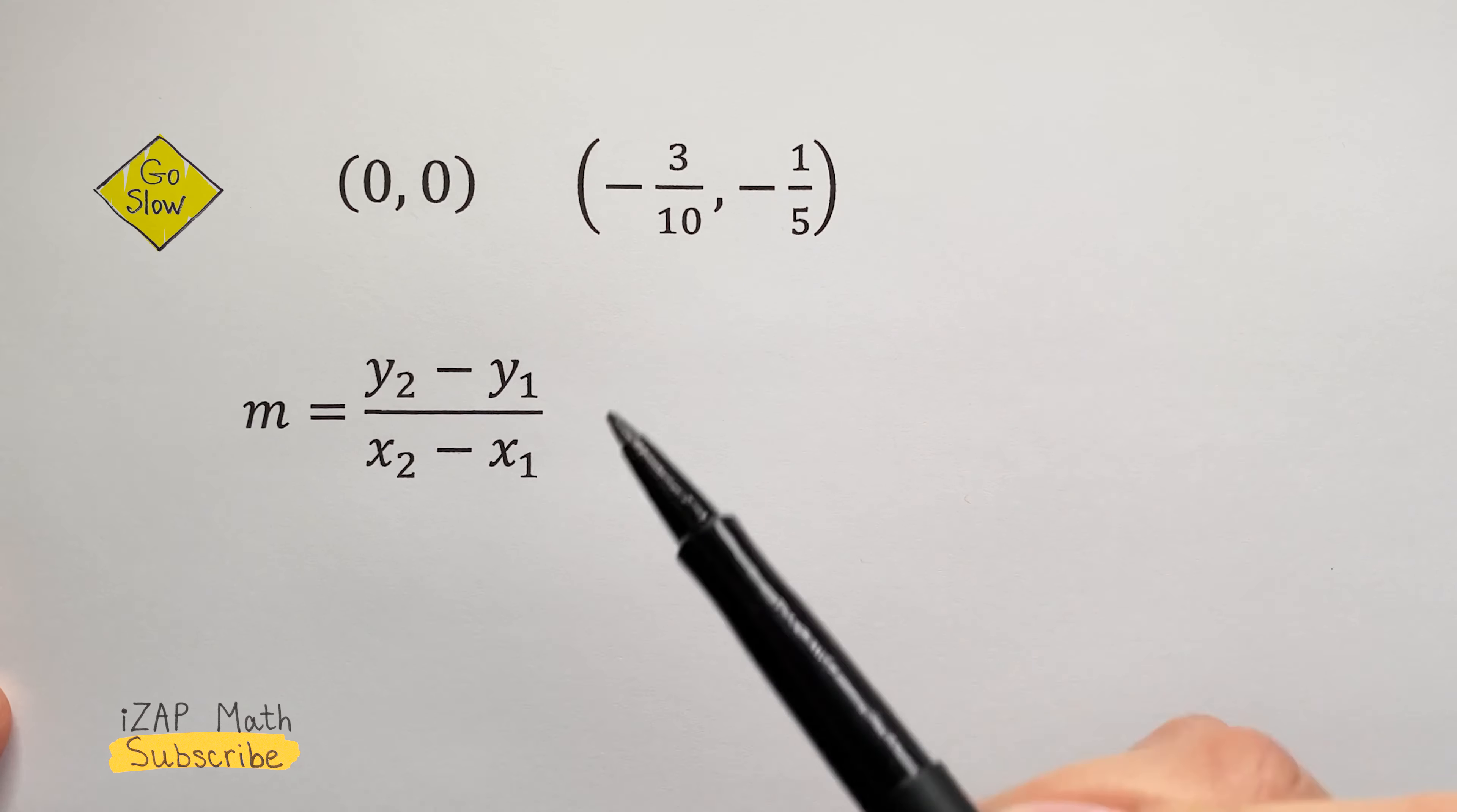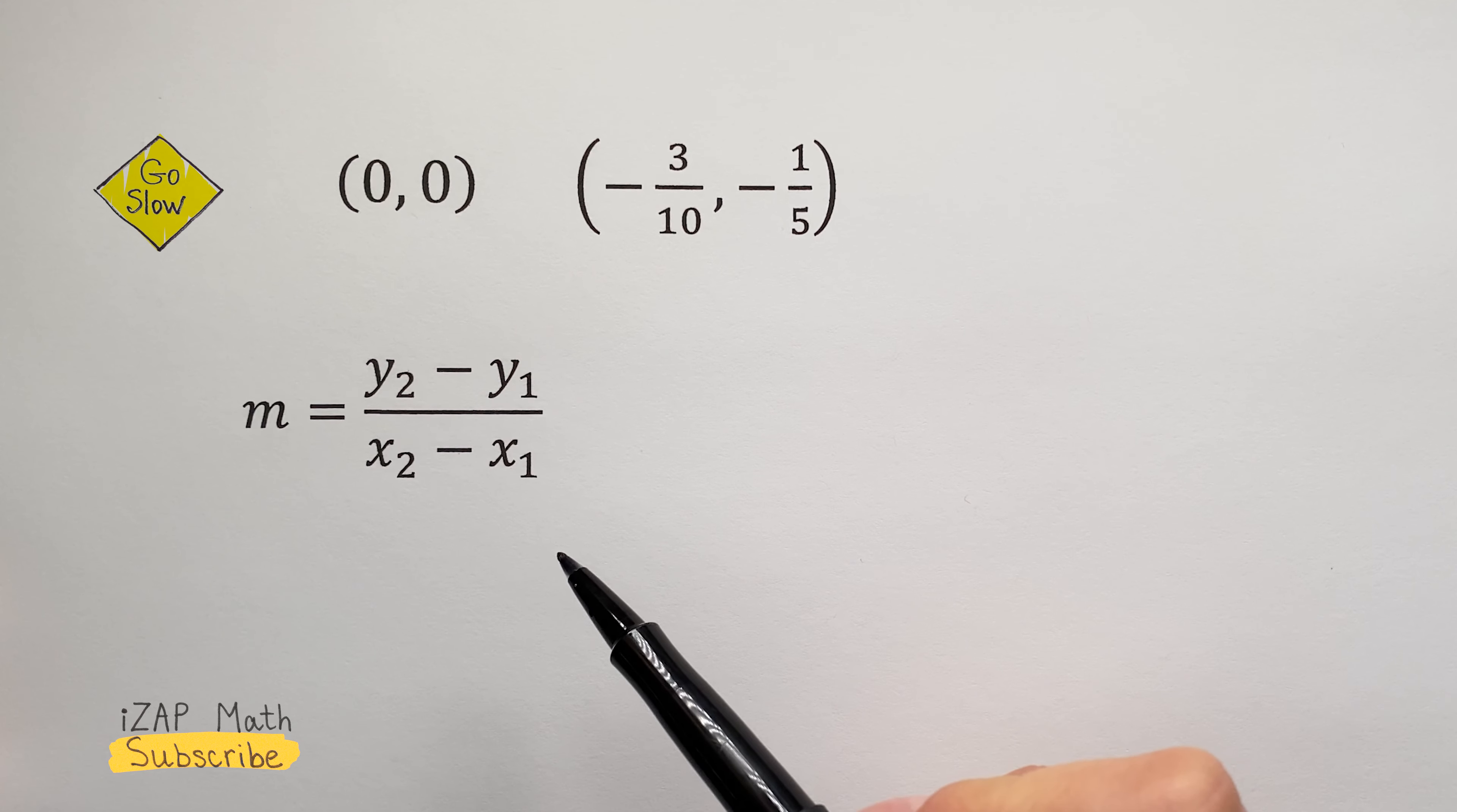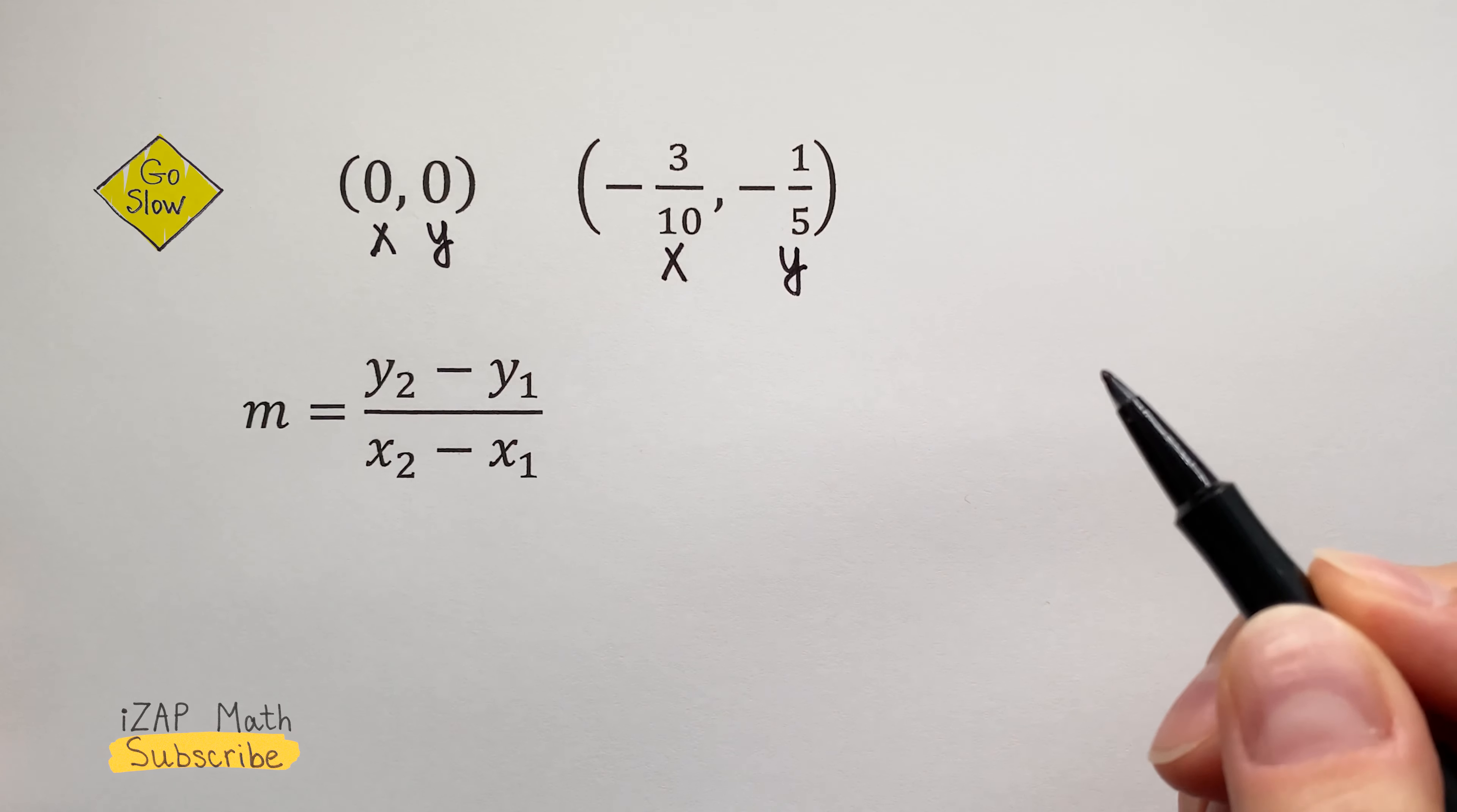We have nice-looking points, and this is the formula to find the slope between two points. M stands for slope. To figure out what y2 and y1 are, let's label our points. Each point has an x-coordinate and a y-coordinate.